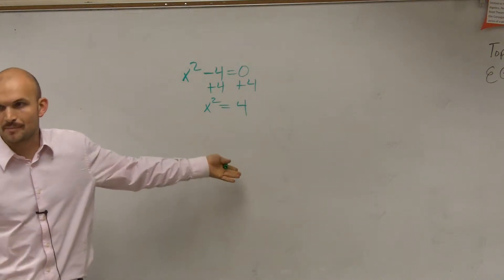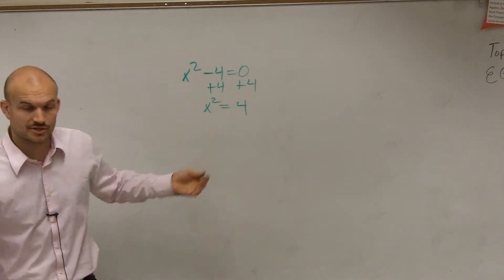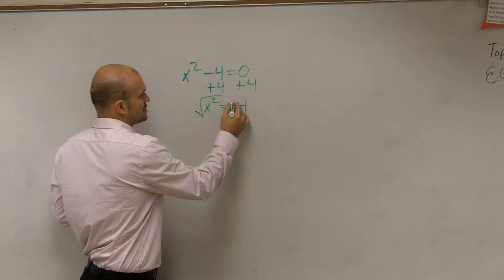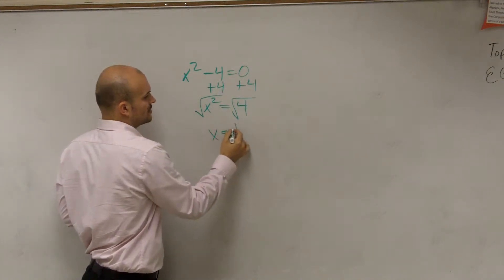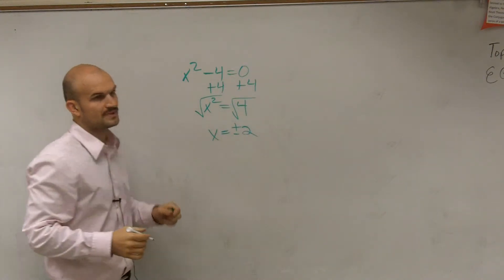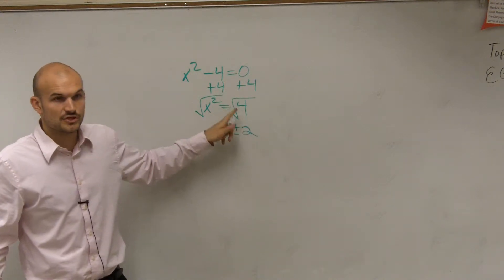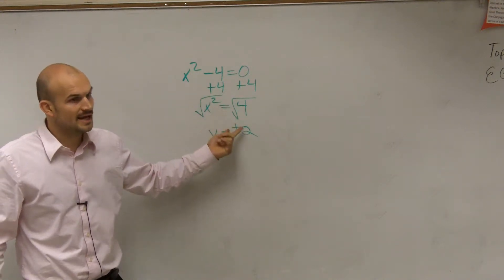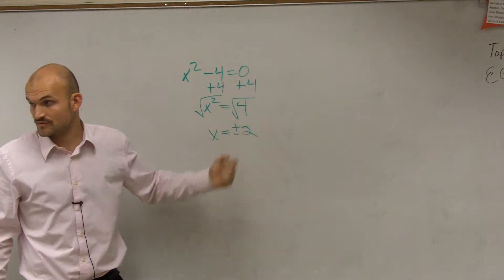Then I have x squared equals positive 4. Then my inverse operation of squaring a number is to square root. So you take the square root and you say x equals plus or minus 2. Because positive 2 times 2 equals 4, and negative 2 times negative 2 equals 4. Correct?